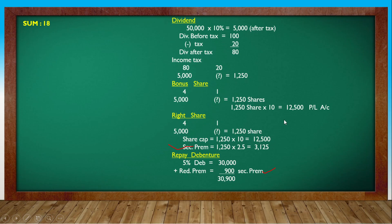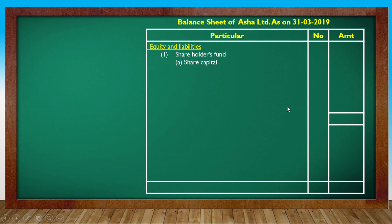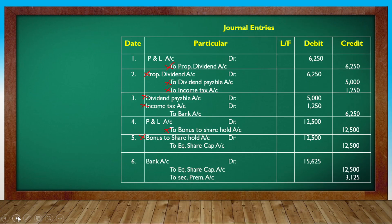12,500 plus 25,000 share capital. 1,250 shares times 2 equals 2,500. Share capital equity share capital: 7,500 shares at ₹10 each equals ₹75,000. Entry in the accounts: 50,000 was the opening balance. After all bonus and right share issues, the updated share capital figure is calculated.